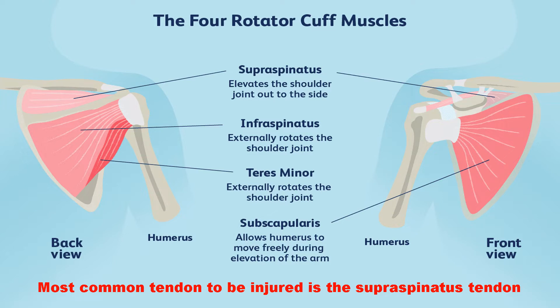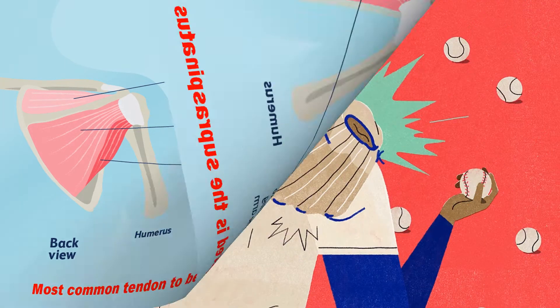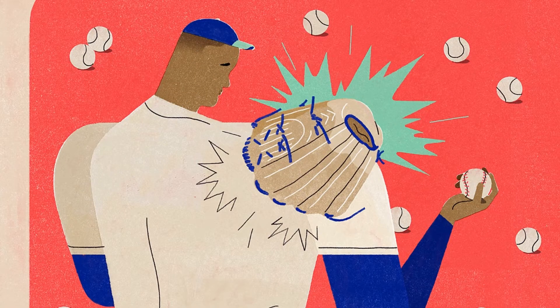The most common tendon to be injured is the supraspinatus tendon. Every time you move your shoulder, you are using the rotator cuff to act as a stabilizer and help the joint to move. Overuse or acute injury can lead to rotator cuff strains or tears.